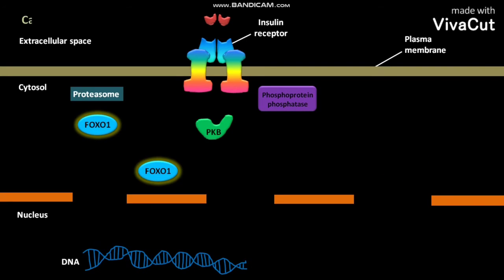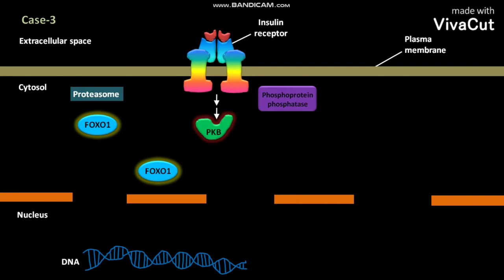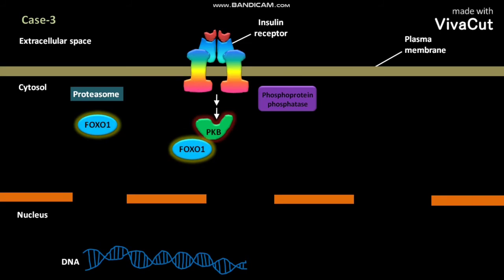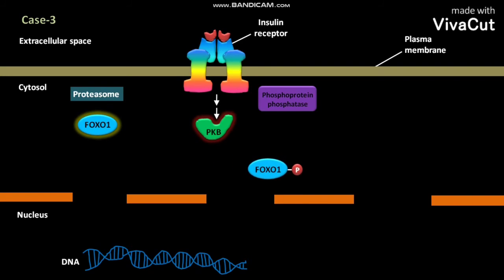In Case 3, insulin binds to the insulin receptor, which activates a signaling cascade. Due to this signaling cascade, PKB is activated. The cytosolic unphosphorylated FOXO1 then binds to the activated PKB and gets phosphorylated. The phosphorylated FOXO1 then leaves the activated PKB.